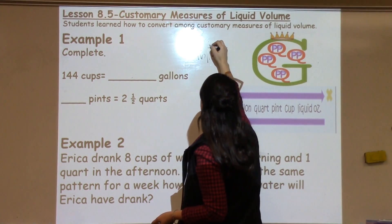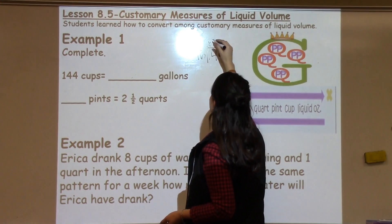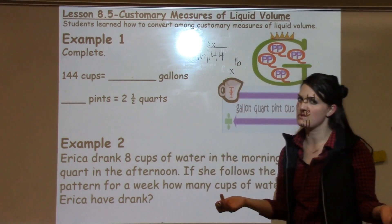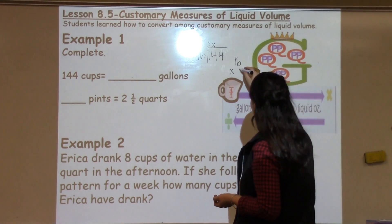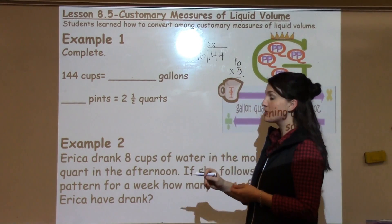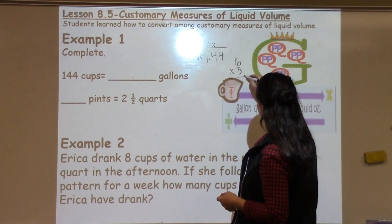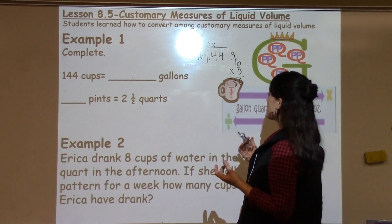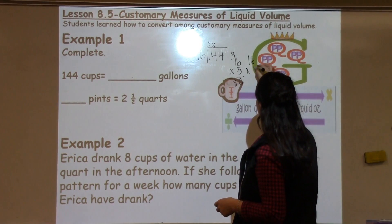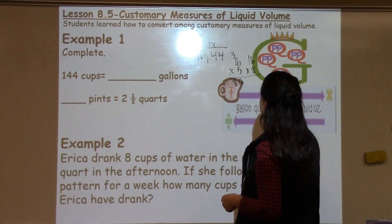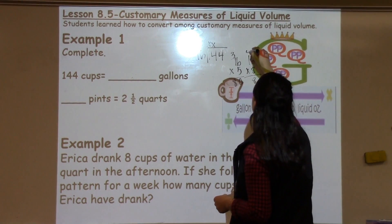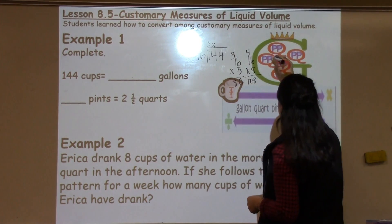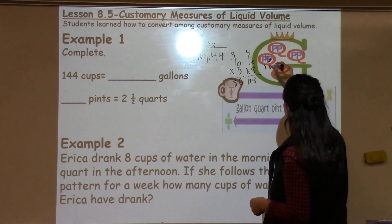I know that 16 cannot go into 1. I know 16 cannot go into 14. So, I need to decide 16 times what gives me pretty close to 144. I'm going to try 5 because that's always a good middle number to check and start with. And I know that's 80, so I need to get quite a bit bigger. So, I'm going to jump up to 8. 6 times 8 is 48. 8 times 1 is 8. Plus 4 is 12.